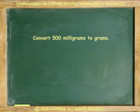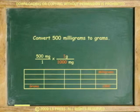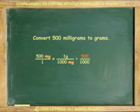Another example. Convert 500 milligrams to grams. 500 milligrams over 1 times 1 gram equals 1000 milligrams. 500 times 1 equals 500. 1 times 1000 equals 1000. Divide 500 by 1000. 0.5 grams is the answer.